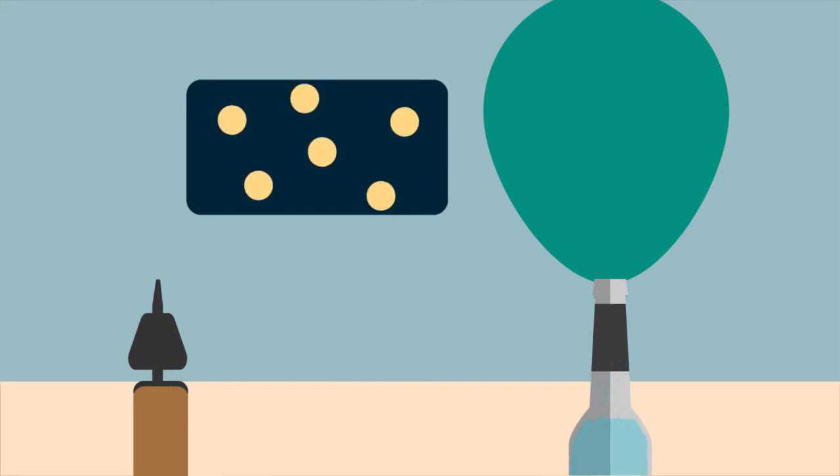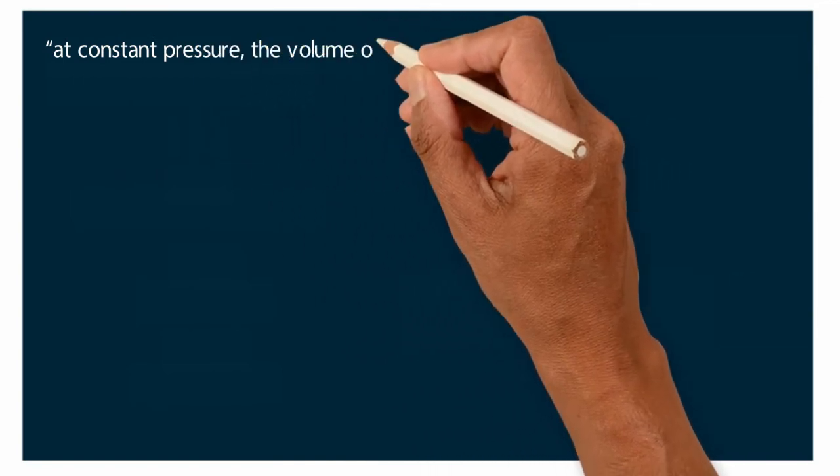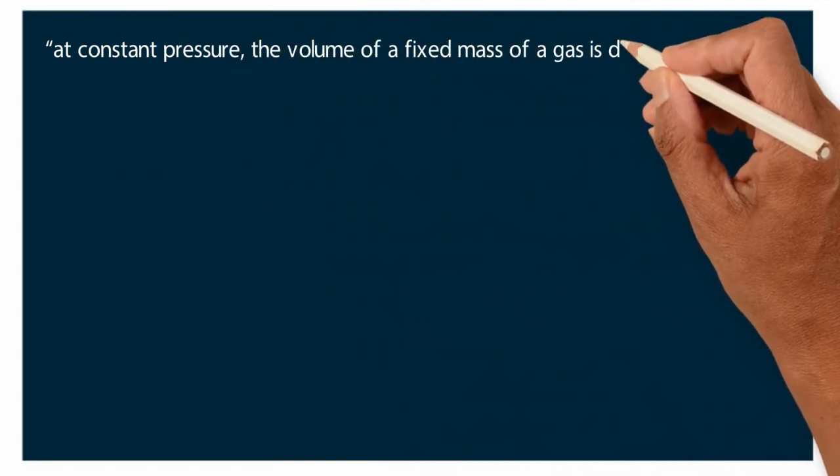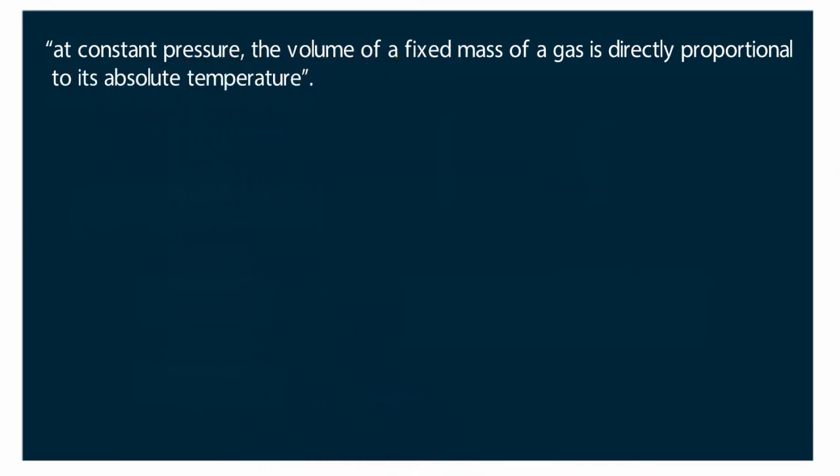Volume of gas increases if temperature increases under constant pressure. Charles law states at constant pressure, the volume of a fixed mass of a gas is directly proportional to its absolute temperature.